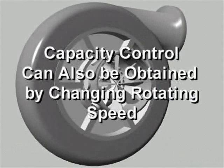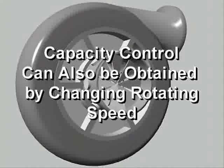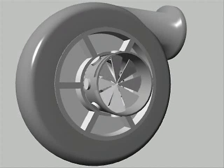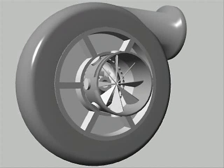In addition, capacity control in a centrifugal compressor can also be obtained by changing the rotating speed. This concludes our segment on the mechanical non-positive displacement vapor compression cycle using a centrifugal compressor.